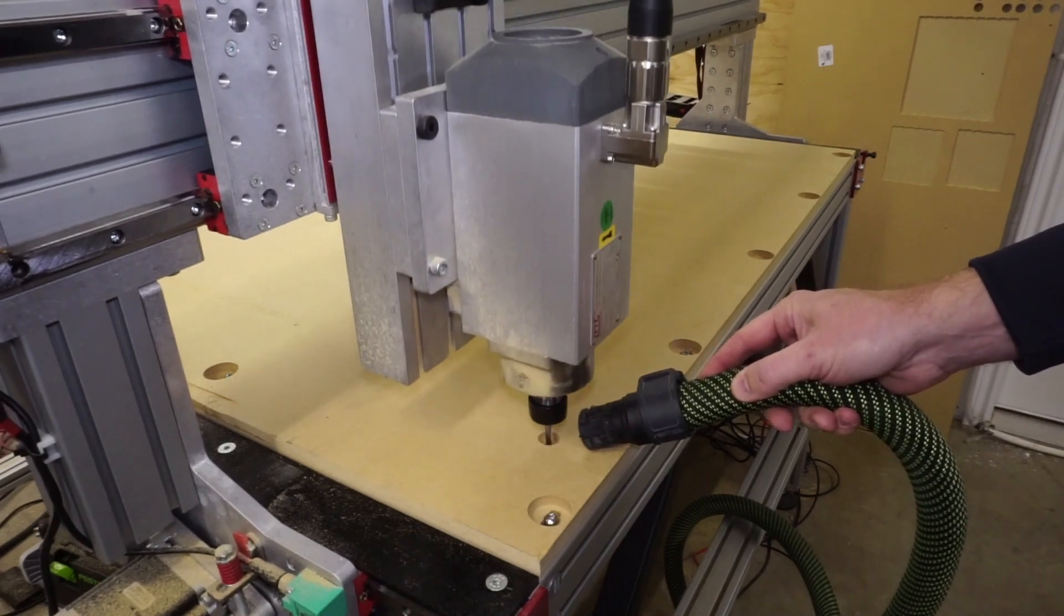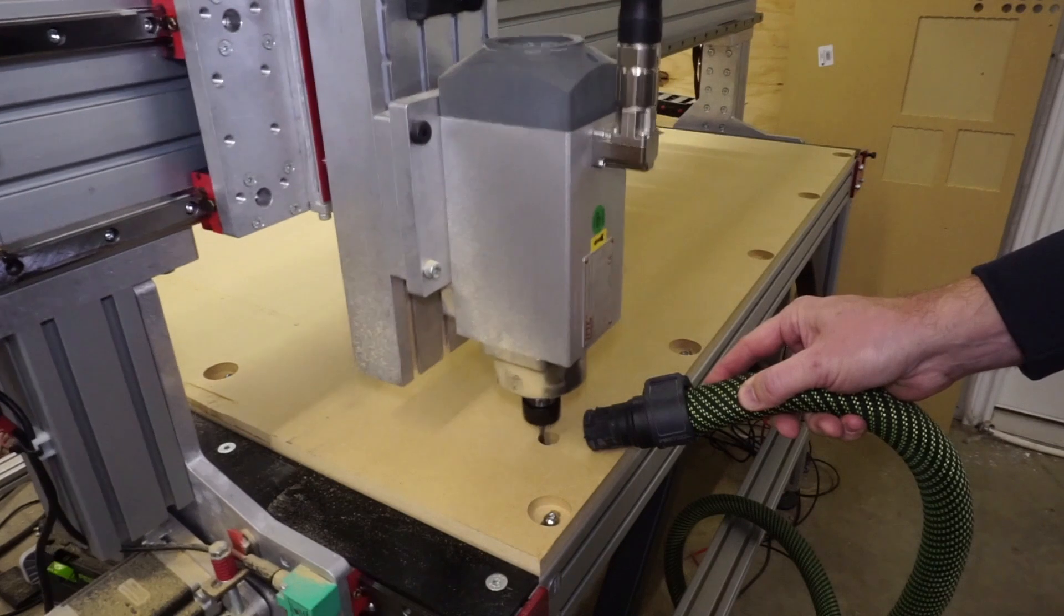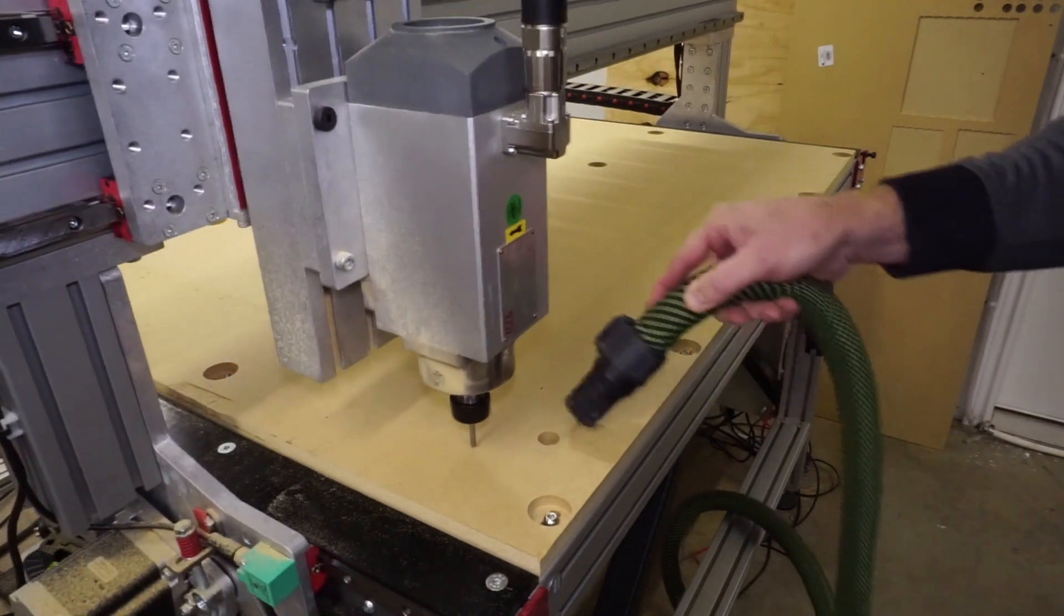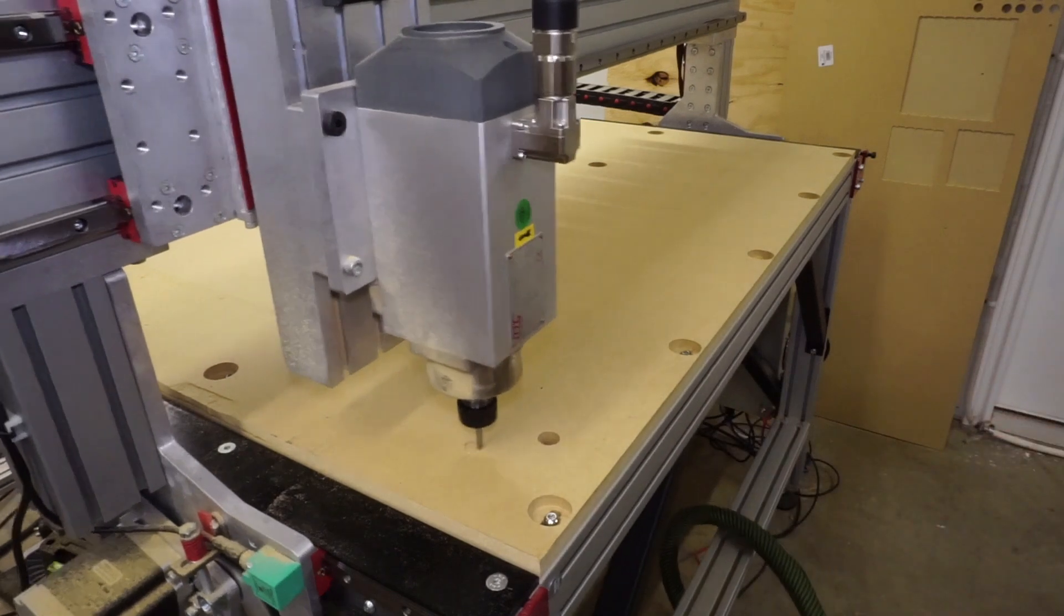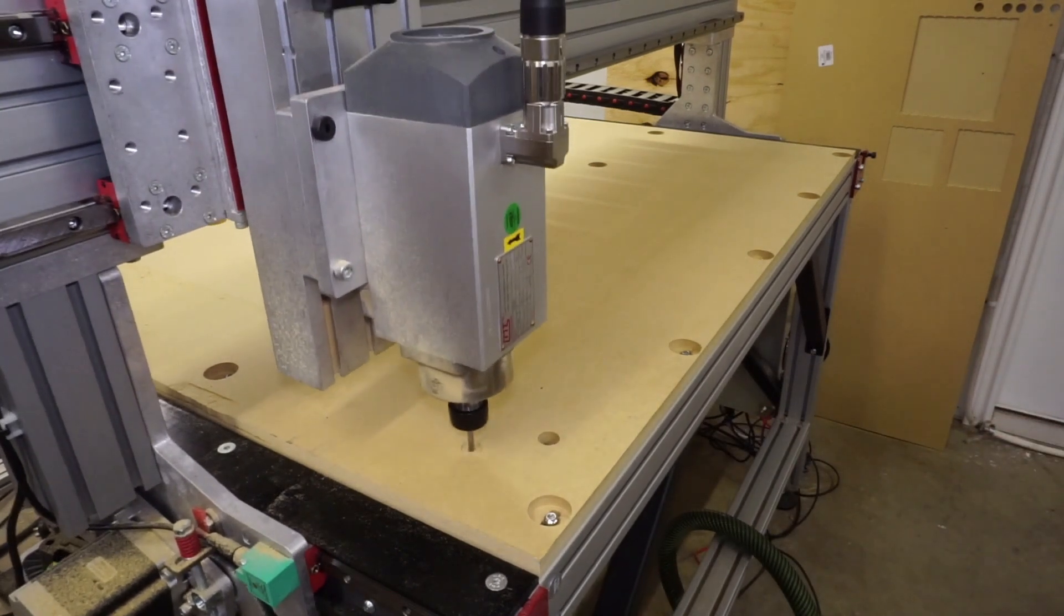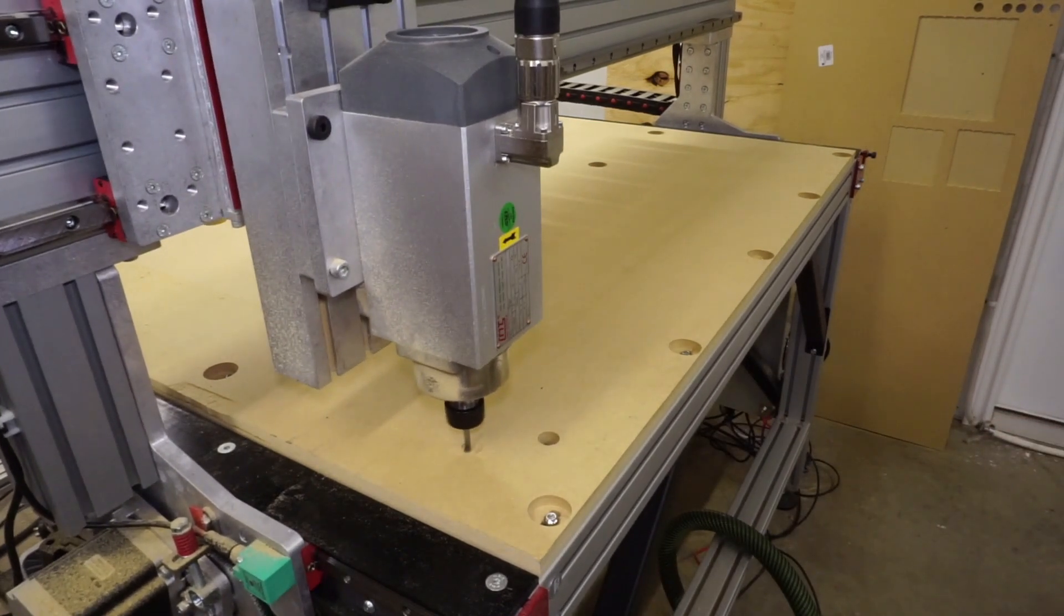Next I cut a pattern of dog holes that would give me a few clamping and location options but I did not want to cut these throughout my entire spoil board as of yet. Remember this is an experimental spoil board to allow me to test out different work holding options and see what's going to work best for me.